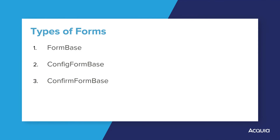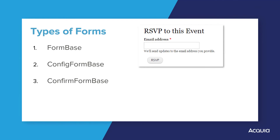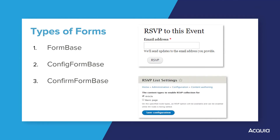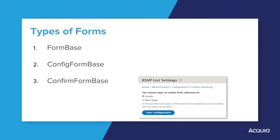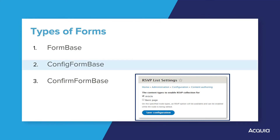Take a moment and try to determine the types of forms we will be extending in our RSVPList module. Remember, one form needs to collect the RSVP details of visitors, and the other form allows Drupal administrators to configure which content types have RSVPList functionality available. The form to collect the RSVP details of visitors should use FormBase as it is a generic form. The other form for Drupal administrators should use ConfigFormBase because it is a configuration form.